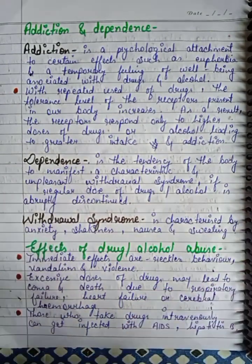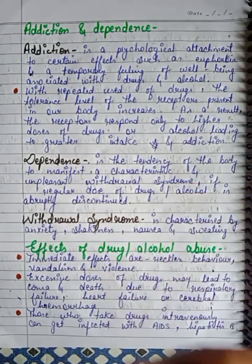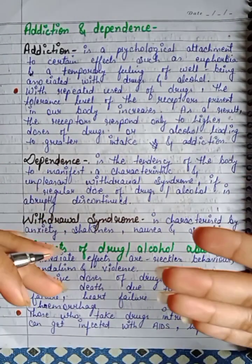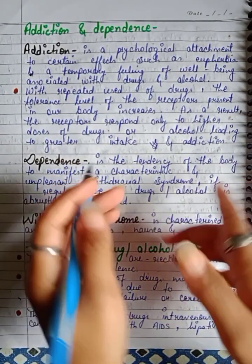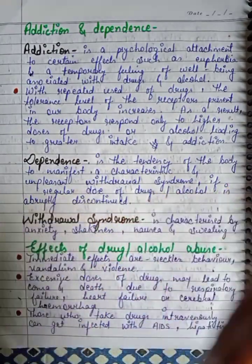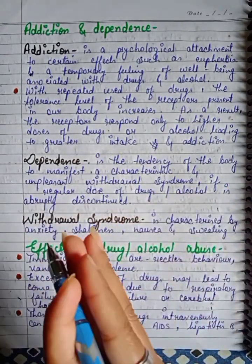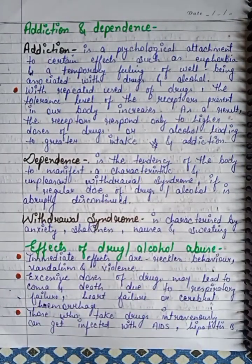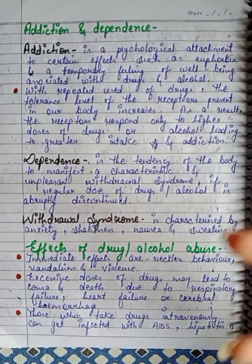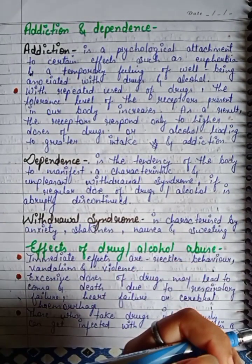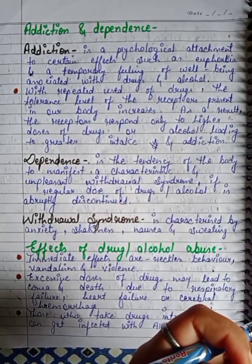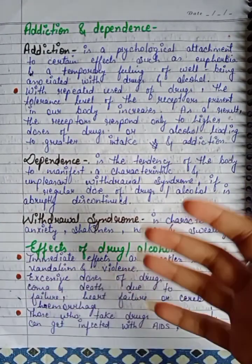When we take drugs repeatedly, the receptors tolerate the initial dose and then demand more drugs. As a result, the receptor responds only to higher doses of drugs and alcohol, leading to greater intake and deeper addiction.